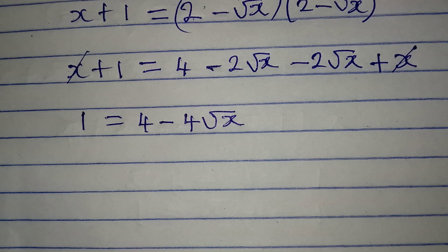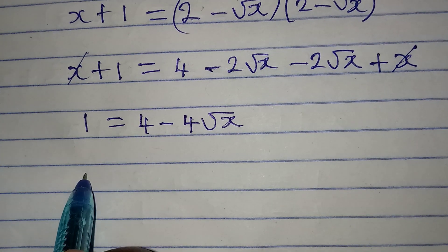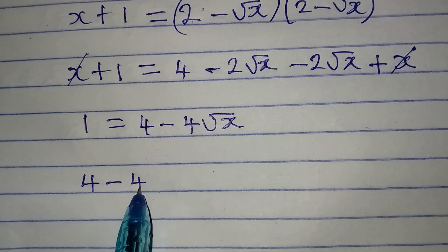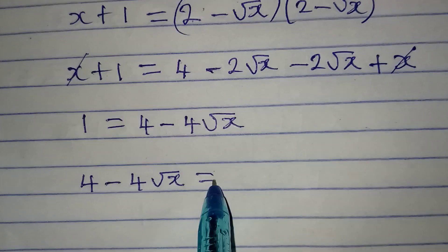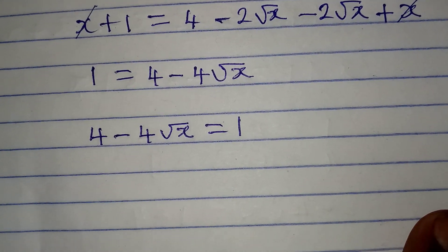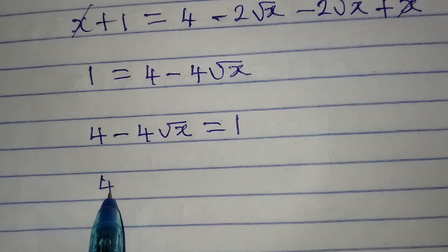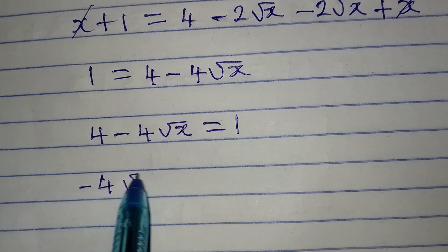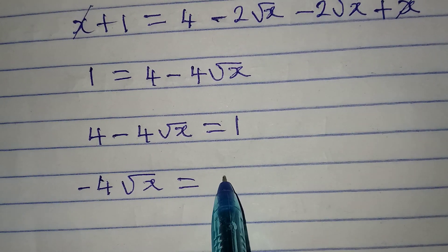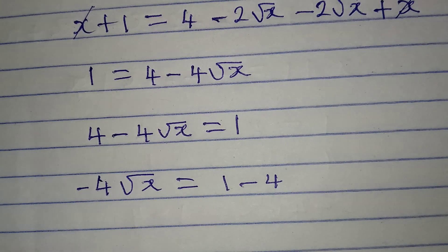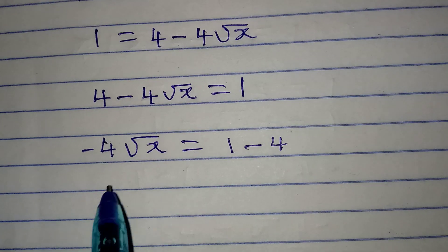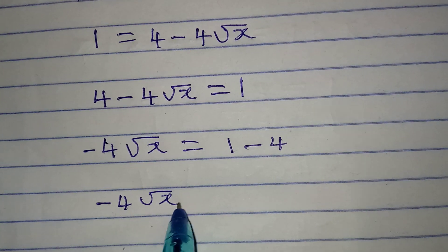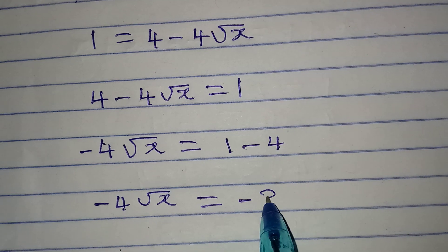So we have 4 minus 4 root x equal to 1. Collecting like terms: minus 4 root x equals 1 minus 4, which gives minus 4 root x equals minus 3.